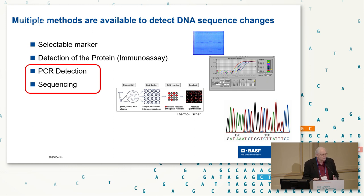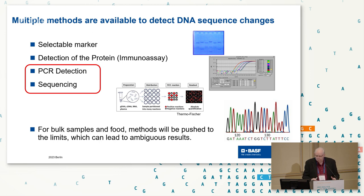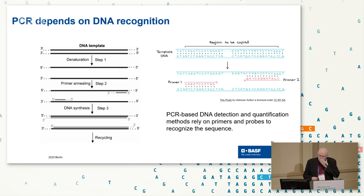In these cases, we may get ambiguous results. Why does that matter? It's in the contracts, there may be legal issues, and for regulatory authorities this is a nightmare — you don't have clear results all the time. You may have them in some cases, and that's where validation and all these other things come into play. PCR depends on DNA recognition.